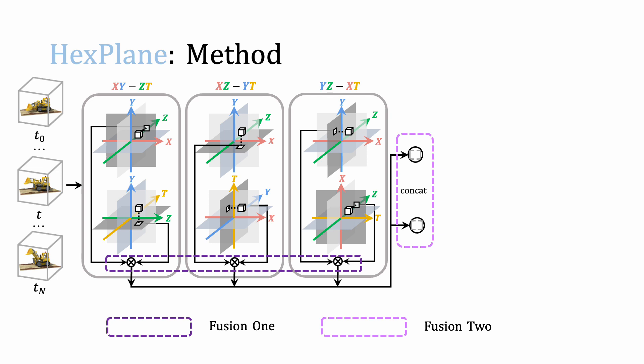RGB colors could be either decoded by a tiny MLP with fused feature vectors and view directions as inputs, or using spherical harmonics without MLPs. With densities and colors, images are rendered by volumetric rendering, and HexPlane is optimized by photometric loss between rendered and ground truth images.